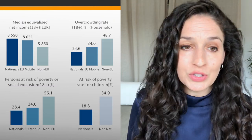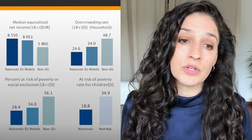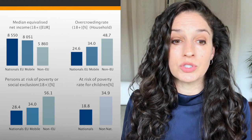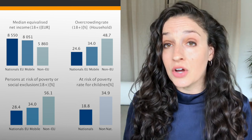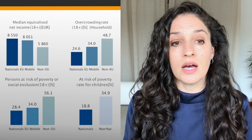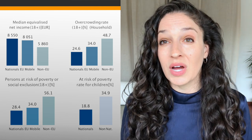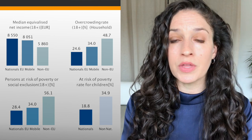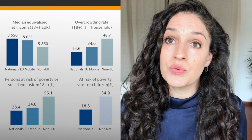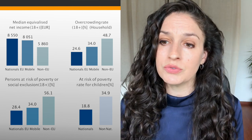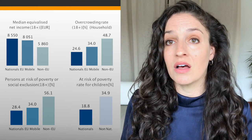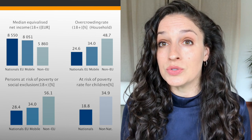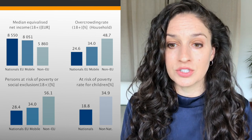Now let's look at indicators of social inclusion, starting with income. Greek nationals have the highest income levels, though it's quite close with other European nationals. Non-European immigrants have clearly the lowest income. Overcrowding rates are also higher in immigrant populations, particularly those from outside the EU. Looking at risk of poverty and social exclusion — for both adults and children — there are much higher risks among immigrant groups than among nationals, and this risk is even higher among non-European nationals.